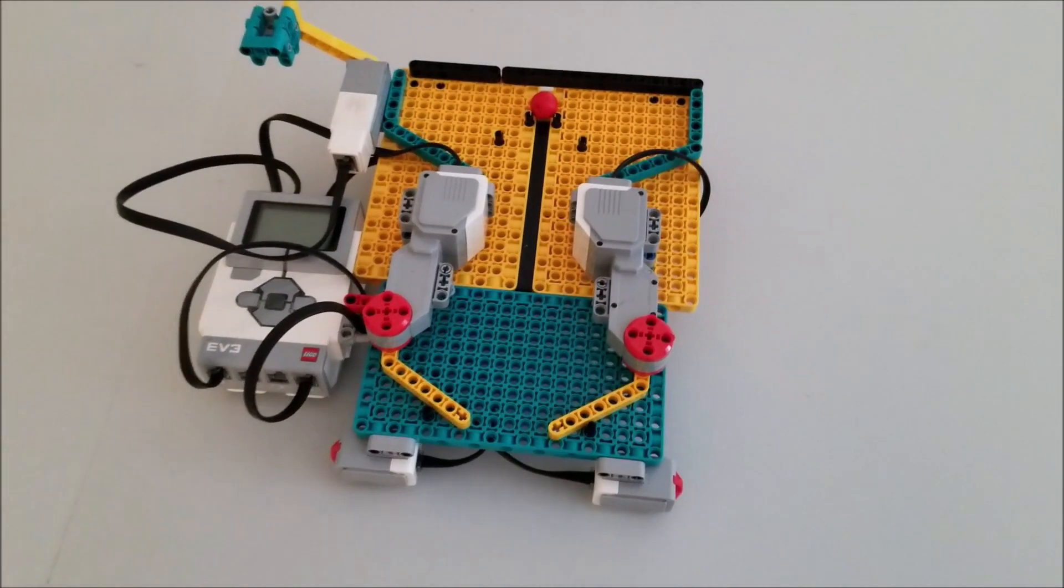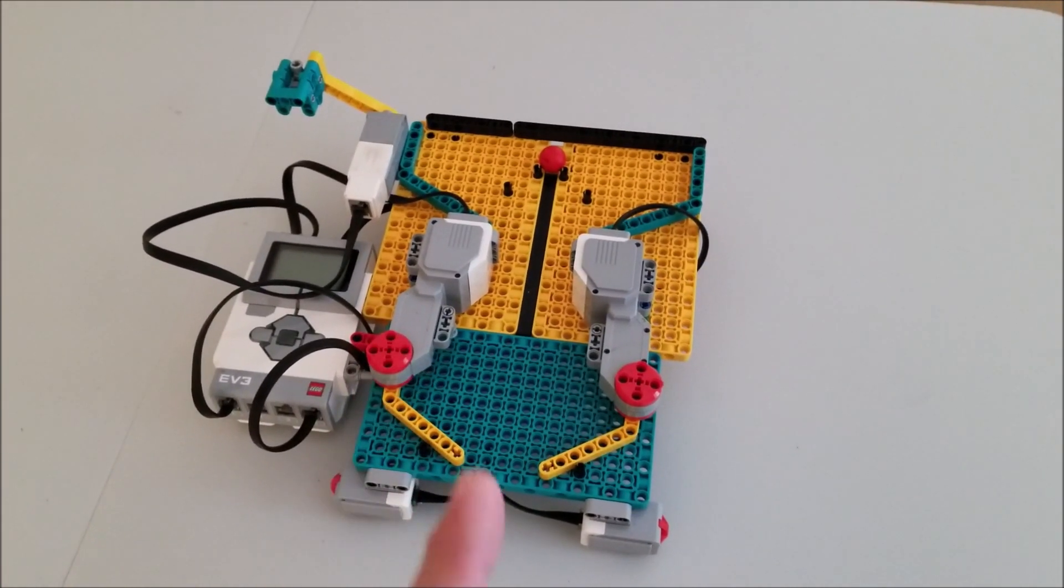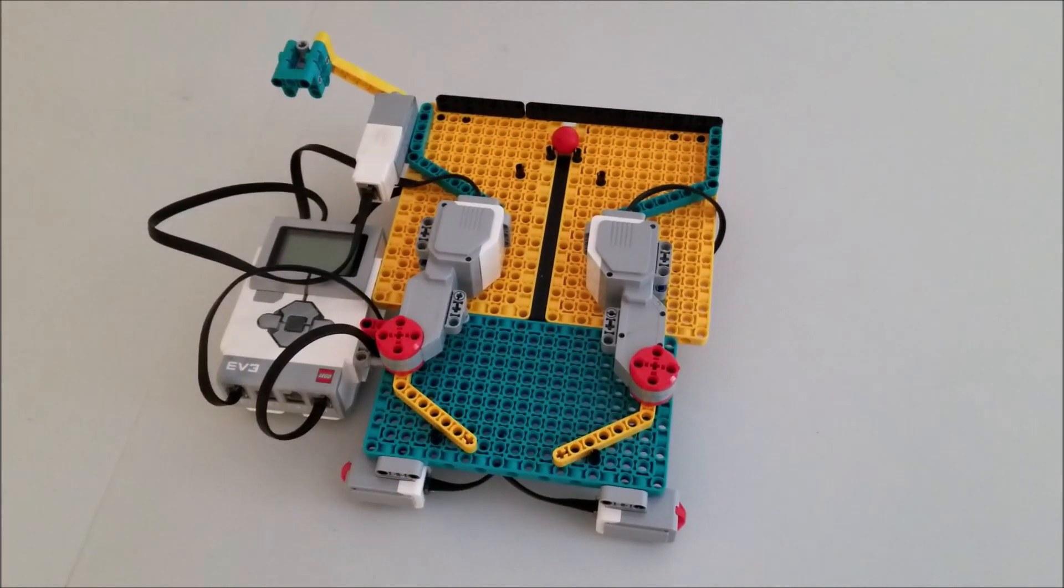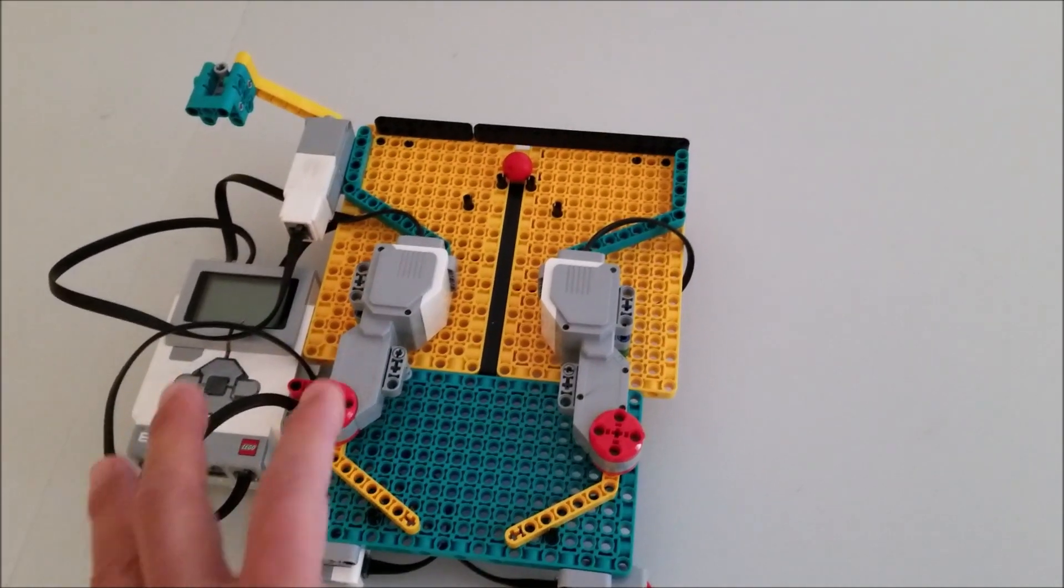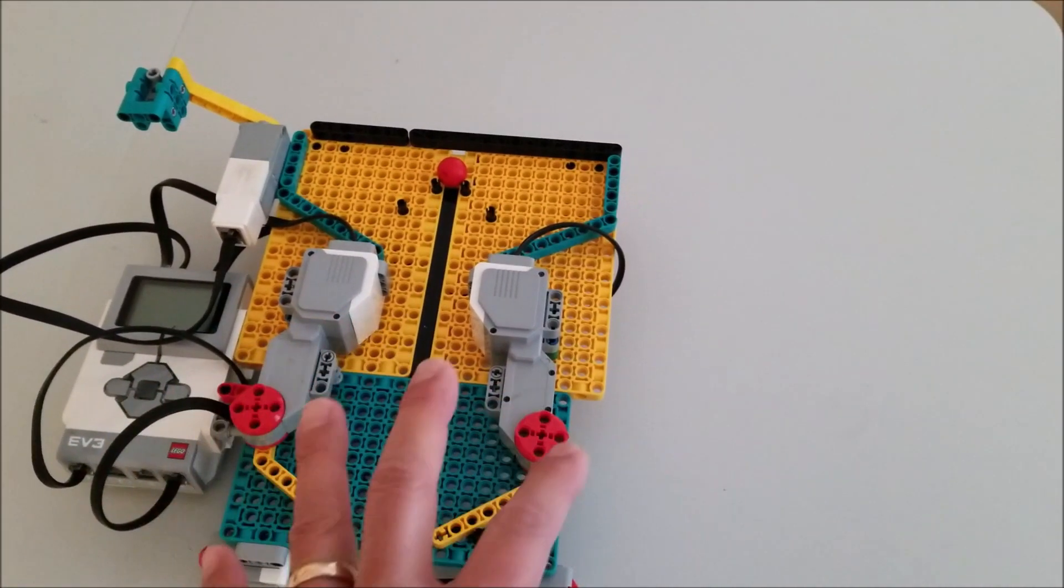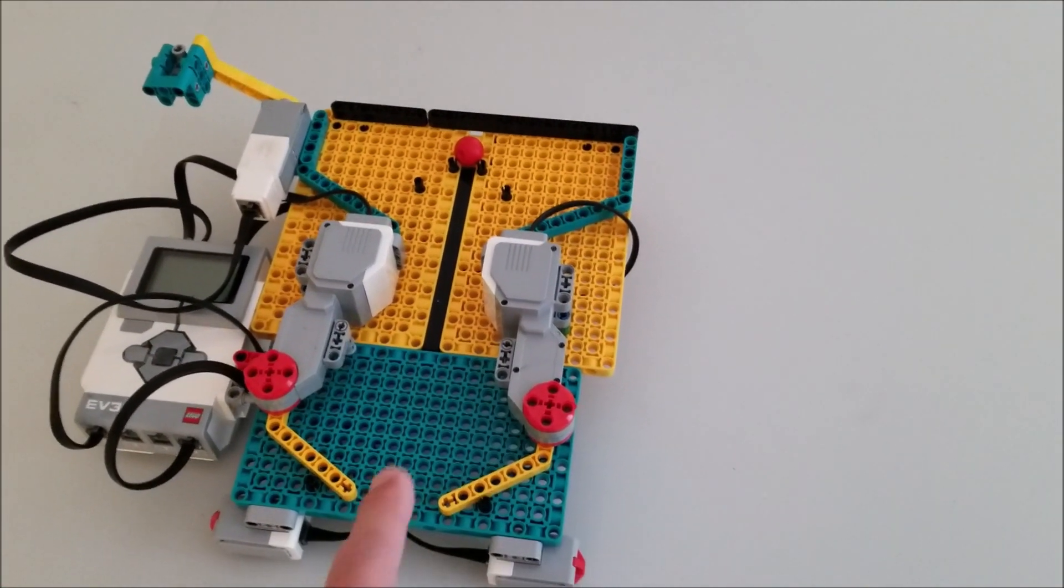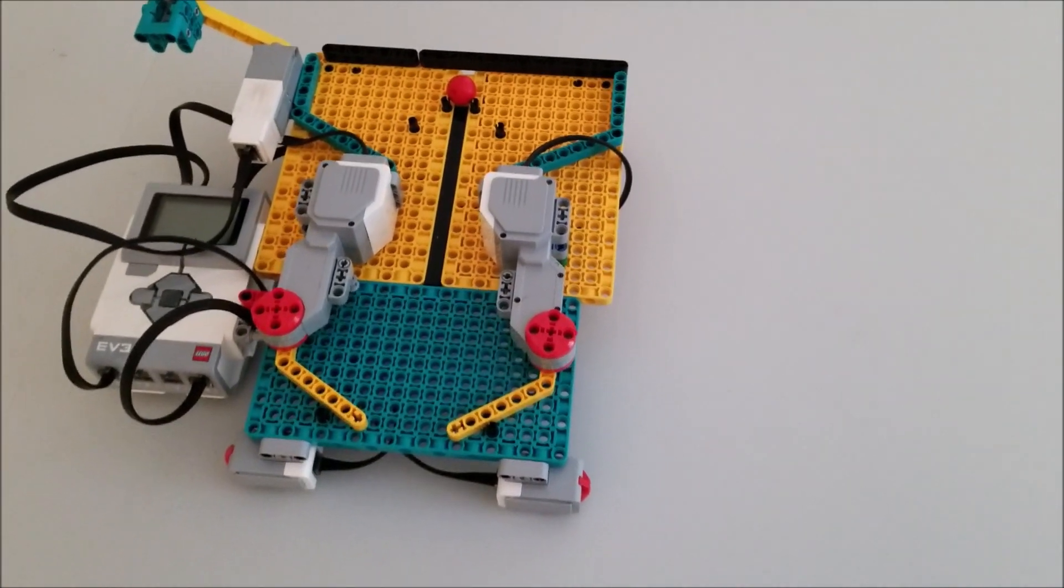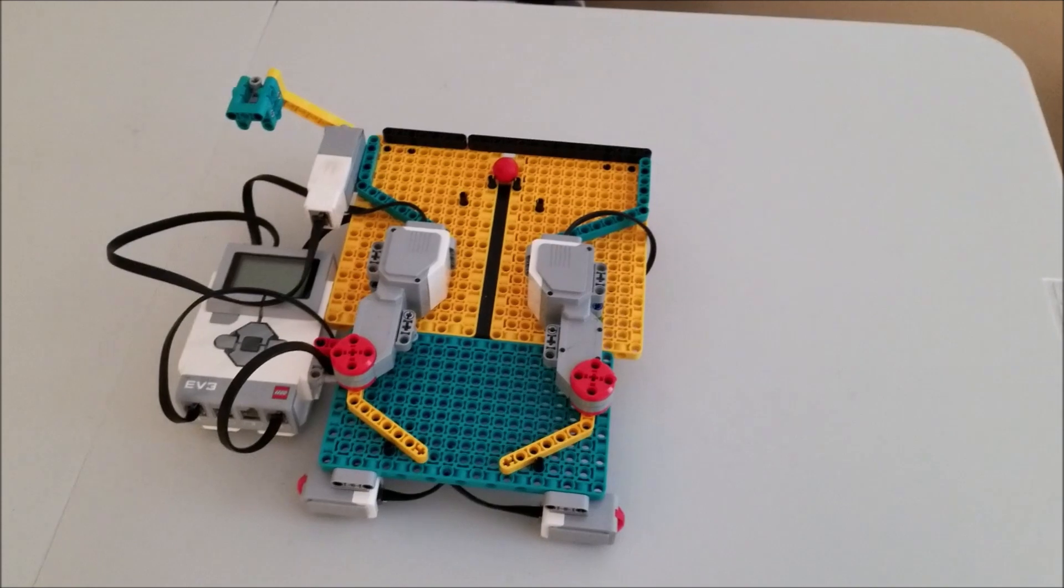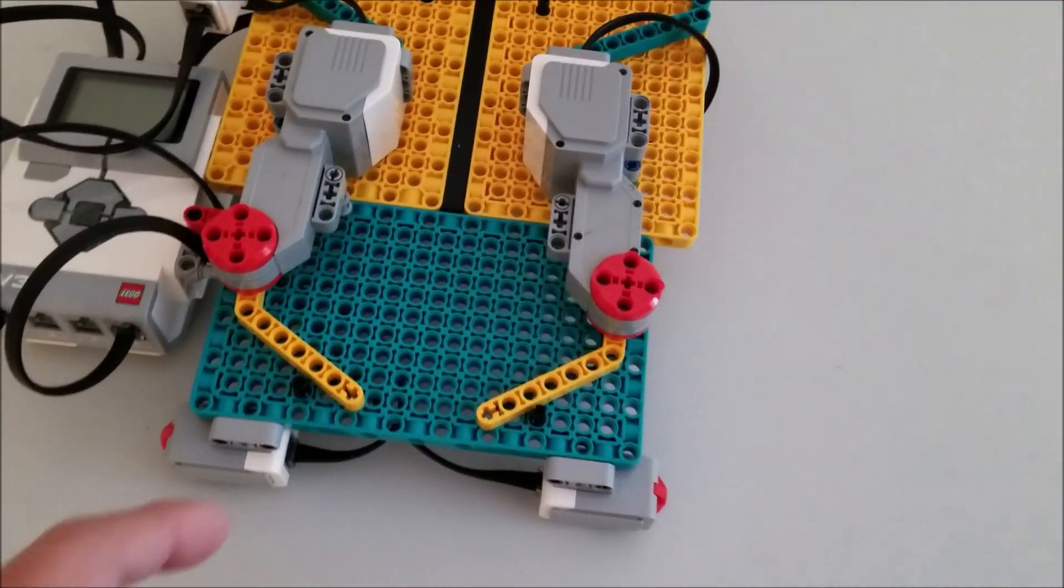That is the Lego EV3 Spike Prime and Inventor pinball machine. So what I did is I was thinking I needed some type of big platform for the ball to kind of bounce around. So that's where the cool Spike Prime, the two yellow ones, and this teal colored base plates really came in handy. And so, and then I'm thinking, okay, I'm going to need some flippers.